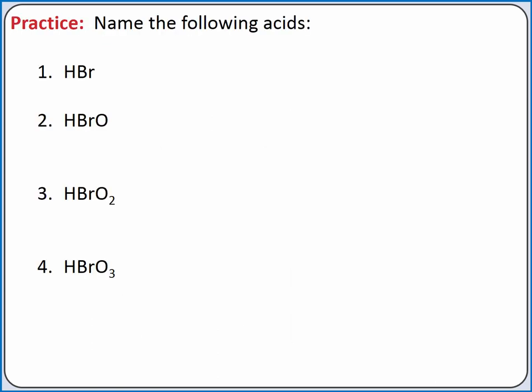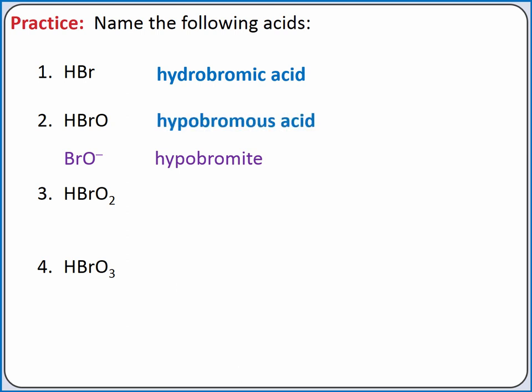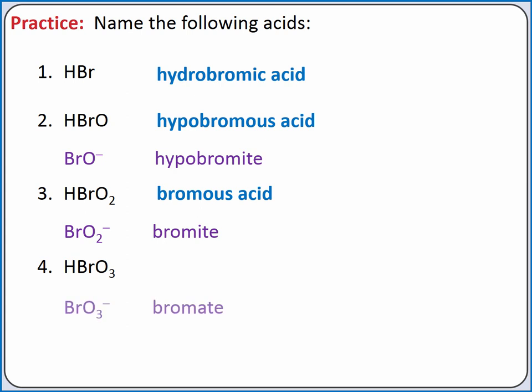Let's practice naming acids. HBr is a binary acid, so we name it using the prefix hydro, changing the ending of the nonmetal to -ic, and adding acid — HBr is hydrobromic acid. HBrO is an oxy acid; Br-O is hypobromite, so we change the ending to -ous and add acid: HBrO is hypobromous acid. HBrO2 is also an oxy acid, formed from BrO2 minus, which is bromite, so we change the ending to -ous and add acid: HBrO2 is bromous acid. Finally, HBrO3 is an oxy acid formed from BrO3 minus, which is bromate — we change the ending to -ic and add acid: HBrO3 is bromic acid.